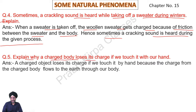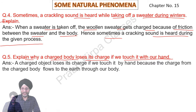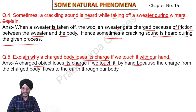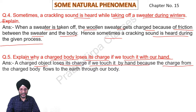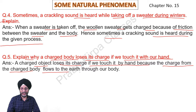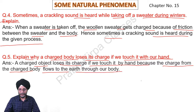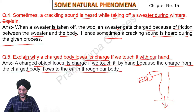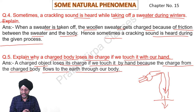Question 5: Explain why a charged body loses its charge if we touch it with our hand. A charged object loses its charge if we touch it by hand because the charge from the charged body flows to the earth through our body. The charge flows from the charged body to our hand and then from our body to the earth, so all of the charge passes to the earth and the body becomes discharged.